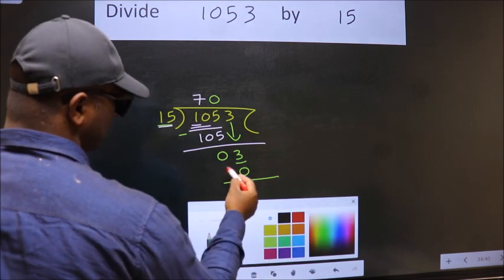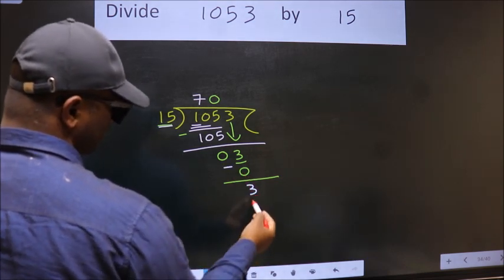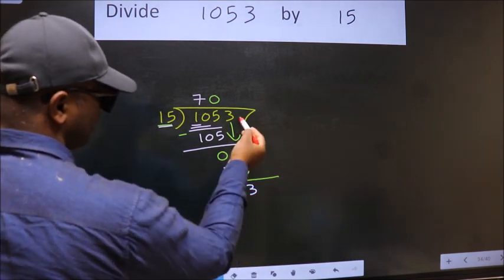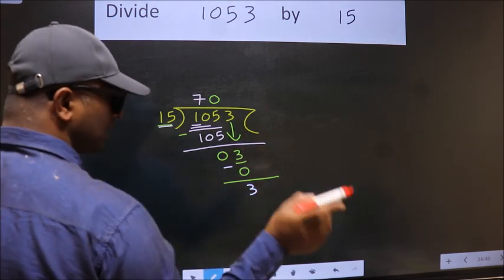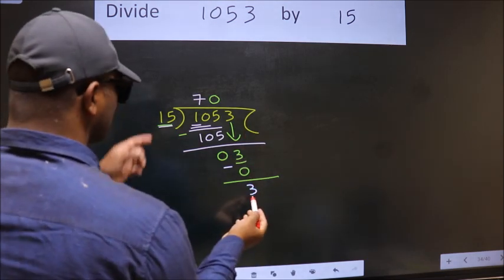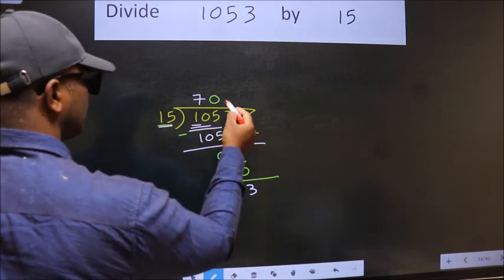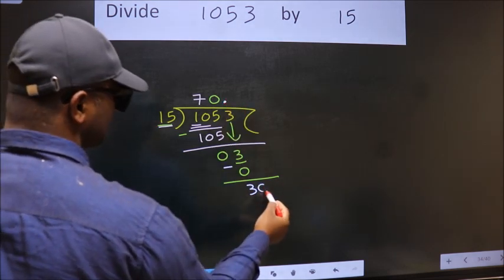Now we subtract and get 3. Here, we did not bring any number down, and 3 is smaller than 15. So now we can put a dot and take 0. So, 30.